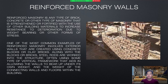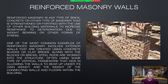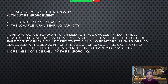Reinforced masonry walls is any type of brick, concrete, or other type of masonry that is strengthened or fortified with the use of other building materials to increase the resistance to deterioration due to weight, bearing, or other form of stress. One of the most common examples of reinforced masonry involves exterior walls that are created using concrete blocks or clay bricks. It consists of bricks and concrete blocks. The weaknesses of masonry without reinforcement include the sensitivity of cracks and the low flexural bearing capacity.